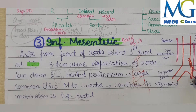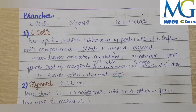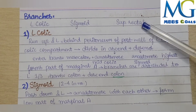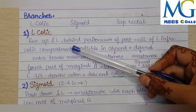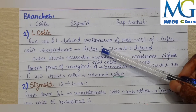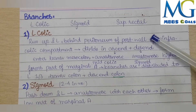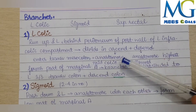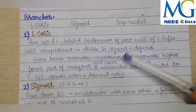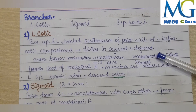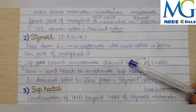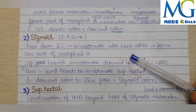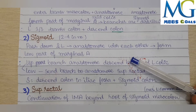The aortic bifurcation is 3-4 cm above its formation. The inferior mesenteric artery moves on the left side into the left infracolic compartment. It divides into ascending and descending branches — the ascending goes to the transverse mesocolon and the middle colic, which anastomoses with it.